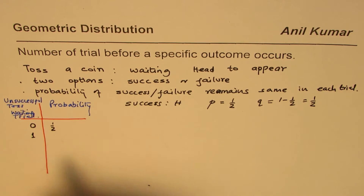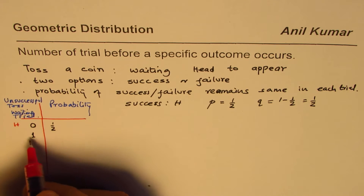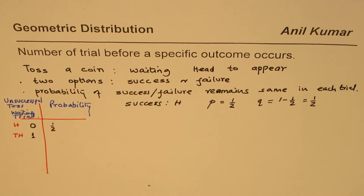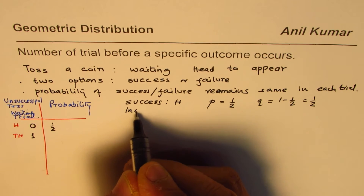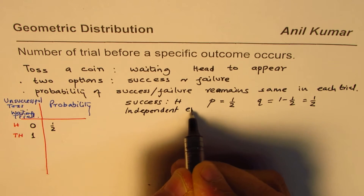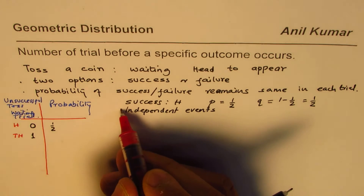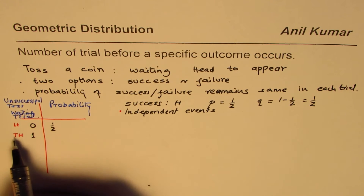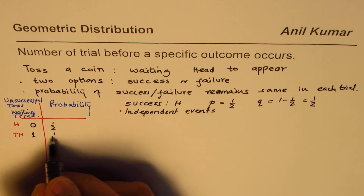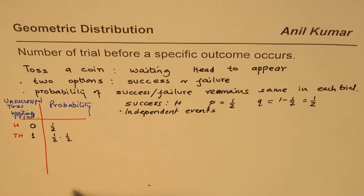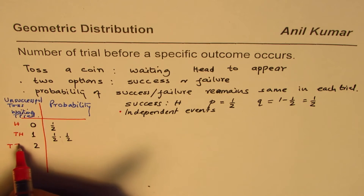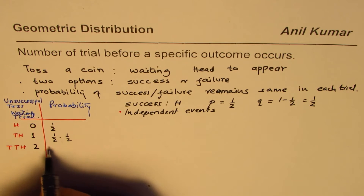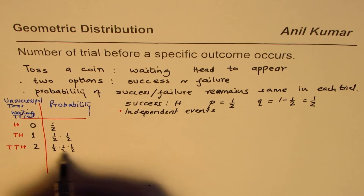So q, which is failure, will be one minus one-half, which is also one-half for our example. If the waiting period is one, that means the first toss is tails and then we get a head — a waiting period of one. Since these are independent events, their probabilities can be multiplied. So for waiting period one, we get one-half times one-half. If the waiting period is two, you get tails twice and then a head: one-half times one-half times one-half.